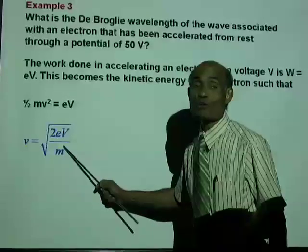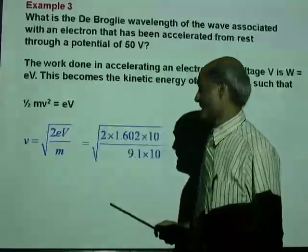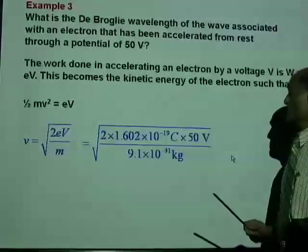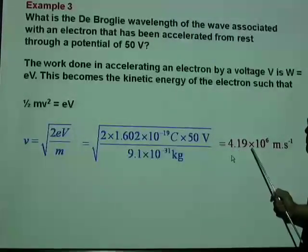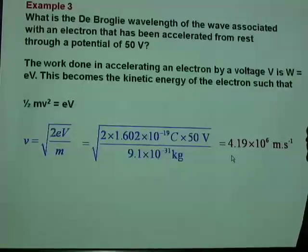The charge on the electron, the potential difference is given, the mass of the electron we know. And using all those values, we get the velocity of the electron is 4.19 times 10 to the 6 meter per second.